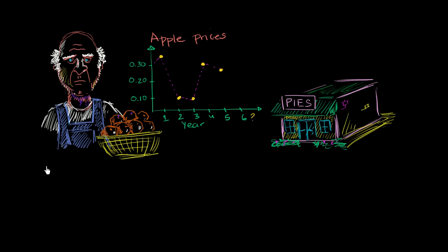Every year, this apple farmer produces 1 million pounds of apples. But he's got a problem. Every year, the apple price jumps around a bunch.